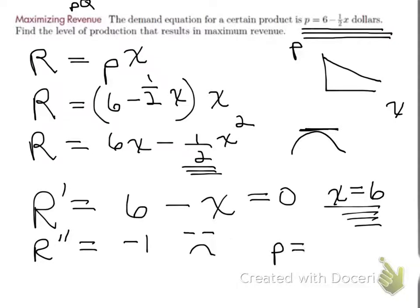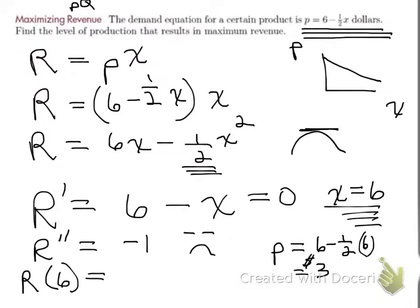Since x = 6 maximizes revenue, we can find the corresponding price using the demand equation: p = 6 − (1/2)(6) = 6 − 3 = $3. Revenue equals price times quantity: $3 × 6 = $18. You should be able to answer all those follow-up questions — price, revenue, and quantity — from the demand equation once you've found the optimal x.